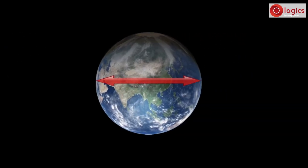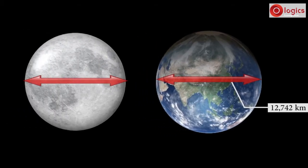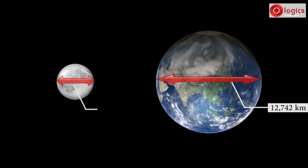We know the diameter of Earth is 12,742 kilometers. Now what is Moon's diameter? Moon's diameter is approximately 1 by 4th of Earth's diameter, which is 3,474 kilometers. That is, Earth is 4 times larger than Moon.